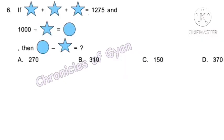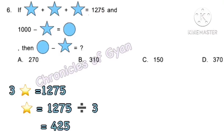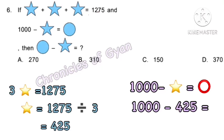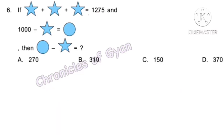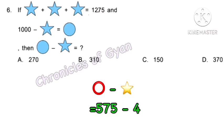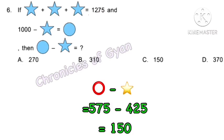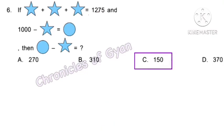Question 6. If ★ plus ★ plus ★ equals 1,275 and 1,000 minus ★ equals ○, then ○ minus ★ equals what? 3★ equals 1,275, so ★ equals 425. Then 1,000 minus 425 equals 575, which is the value of ○. Therefore, ○ minus ★ equals 575 minus 425, which equals option C — 150.